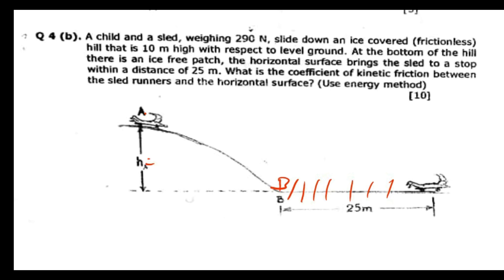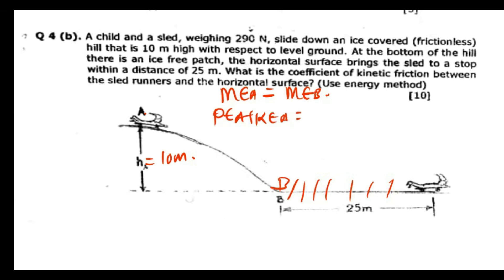We have been told that the height is 10 meters. So what we're going to do is say the mechanical energy at point A has to be equal to the mechanical energy at point B. The potential energy at A plus kinetic energy at A equals potential energy at B plus kinetic energy at B.